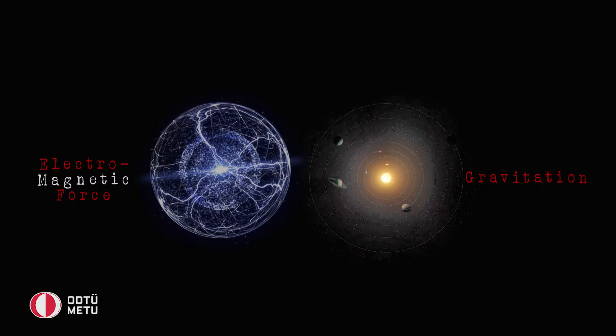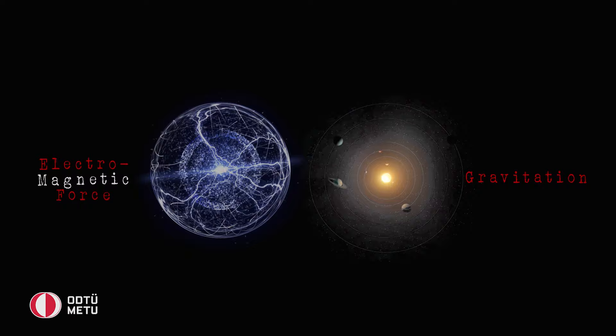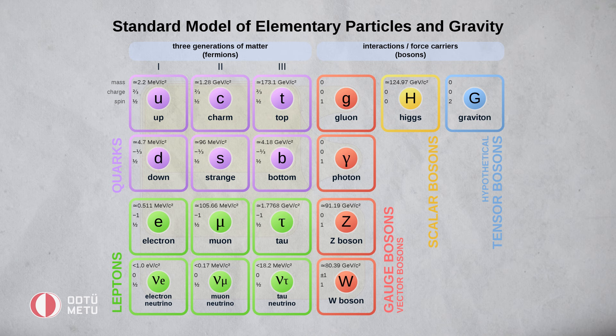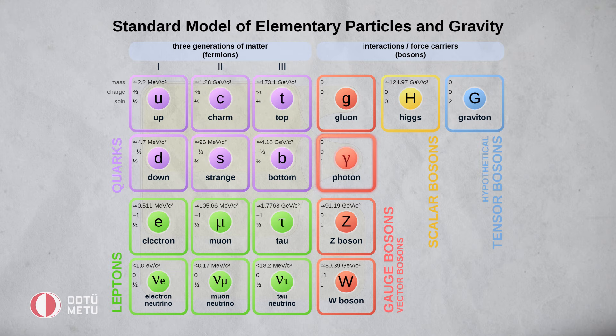Gravity and the electromagnetic force have an infinite range, while the weak and strong forces are effective only at the level of subatomic particles. These forces are transmitted by means of so-called force carrier particles. Each force has its own carrier: strong nuclear interactions are carried by gluons, the weak force by W-plus/minus Z bosons, the electromagnetic force by photons, and the carrier of the gravitational force is called the graviton.